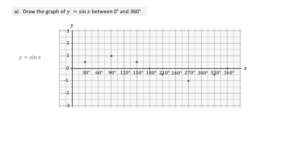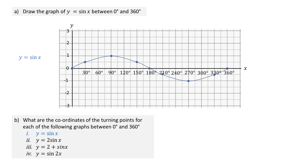Joining these points gives the graph of y equals sine x between 0 and 360 degrees, where the turning points are (90, 1) and (270, −1). Sketching y equals 2 sine x is useful for both part B and part C of the problem.